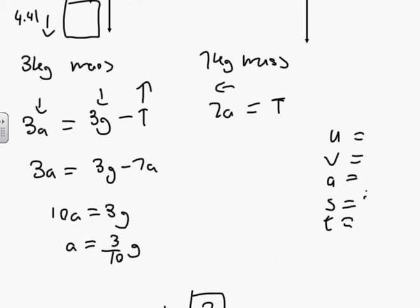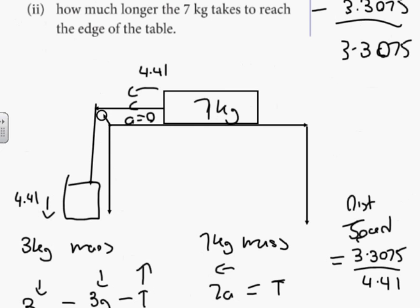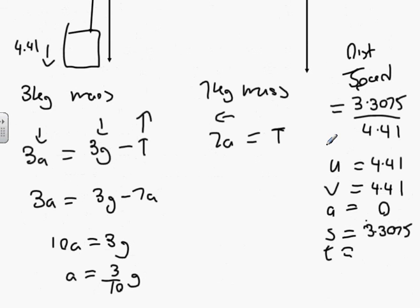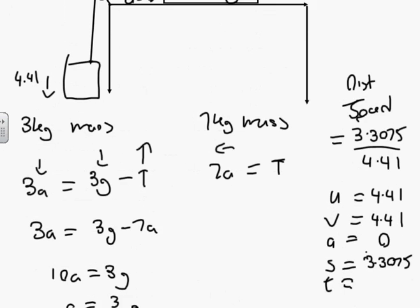Your s value is 3.30. This is linear motion. Distance over speed. Your 3.3075 divided by your 4.41. So it's how long does it take to get to the edge of the table. Distance divided by speed.